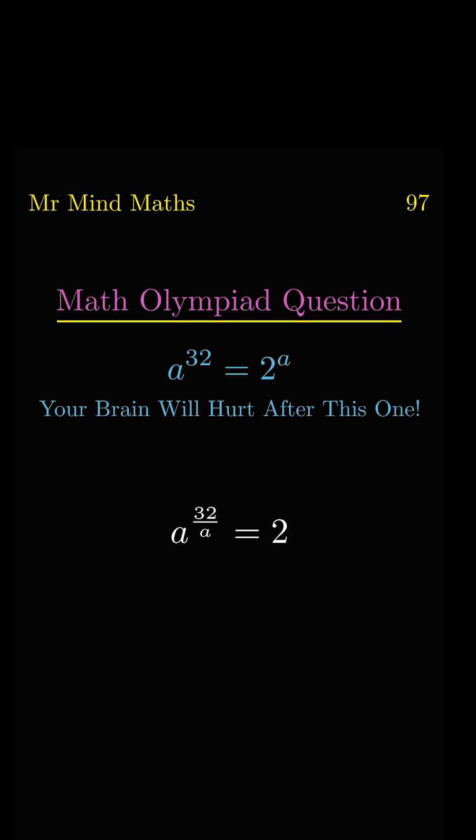Now we will take the 1/32 power on both sides, so that on the left side, 32 and 1/32 will get cancelled.